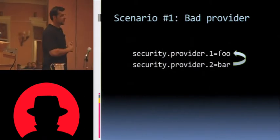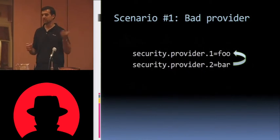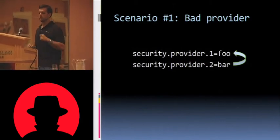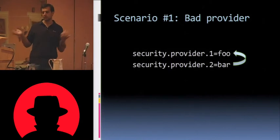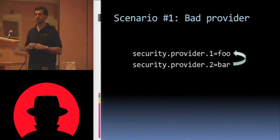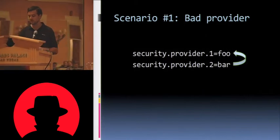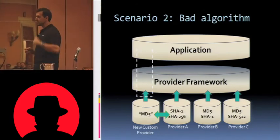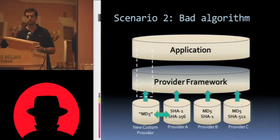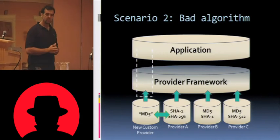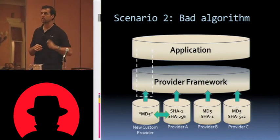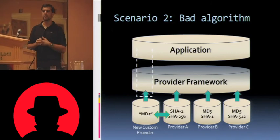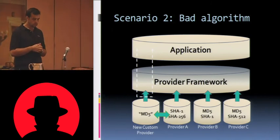Here's one scenario: you just have a bad provider — the algorithm itself is still okay, but this particular implementation is flawed, for FIPS reasons or whatever. Easiest thing in the world: open up that Java security file, switch provider.1 and provider.2, or just remove the bad one entirely and promote the next one. Simple as that. Scenario two is when you have a bad algorithm — unfortunately a much more difficult problem. This is like the sneaker scenario from the beginning: RSA is completely broken, AES is completely broken. Remember how the framework works: the provider framework iterates through each provider in order, asking who knows how to handle this algorithm.